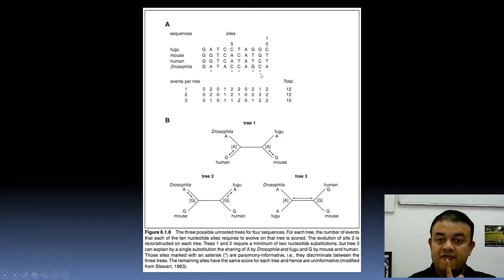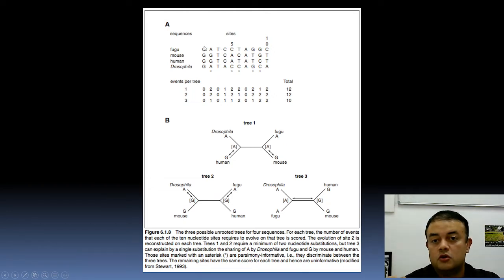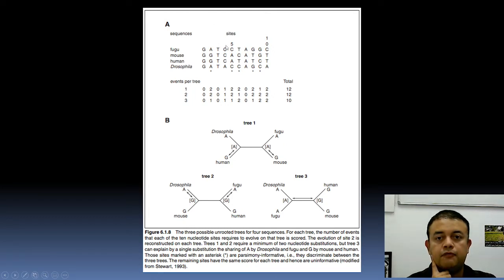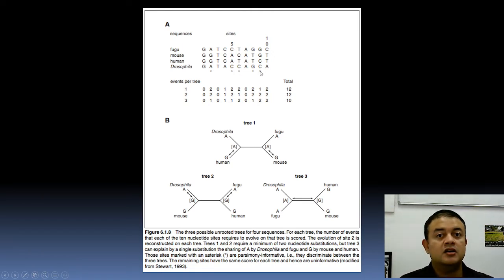Similarly, you construct trees for every position and choose the most optimal tree. However, you only need to draw trees for parsimony informative positions, not all of them. For example, position one is invariable — every sequence has 'G' — so it's useless. Position three is invariable. Position four is a singleton — only one sequence differs from the rest. Position five is parsimony informative. Positions with dots — like five, six, eight, and nine — are parsimony informative sites useful for tree construction.